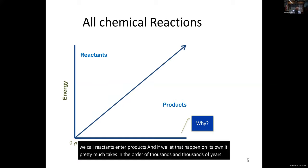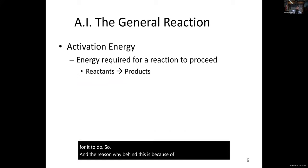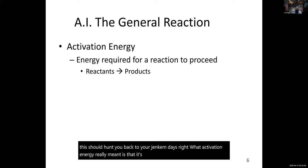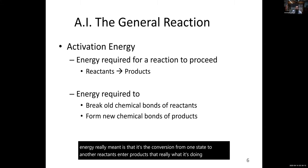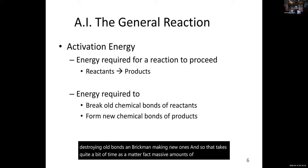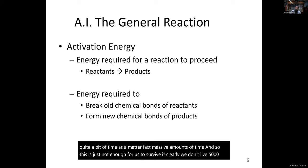The reason behind this slow rate is a term called activation energy — the energy required for the conversion from one state to another, from reactants into products. What it's really doing is destroying old bonds and making new ones, which takes quite a bit of time — massive amounts of time. This is just not enough for us to survive; clearly we don't live a thousand years, so it takes forever for this to happen on its own.